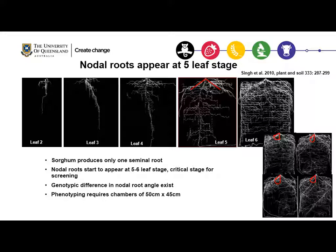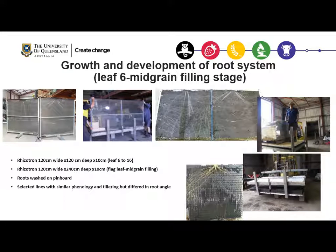To grow sorghum plants to the six-leaf stage, we needed a chamber that is 50 centimeters deep. Knowing the differences in nodal root angle at seedling stage, it was important to link these differences with the root distribution pattern of mature plants.